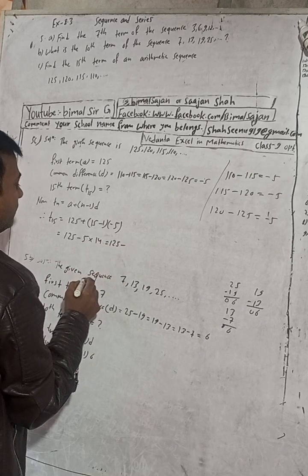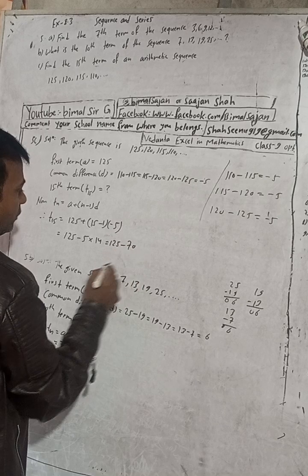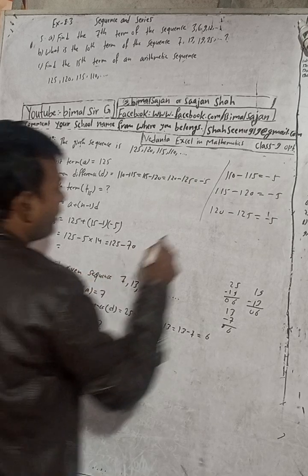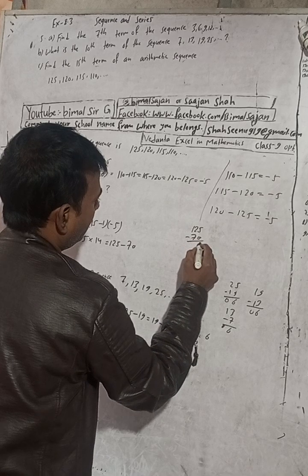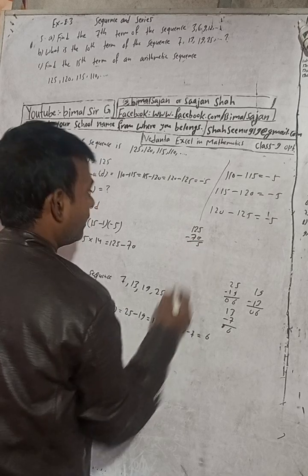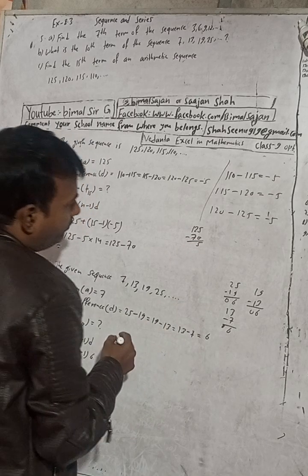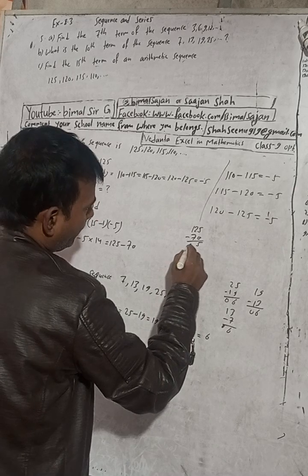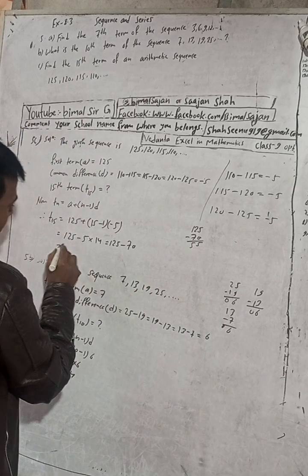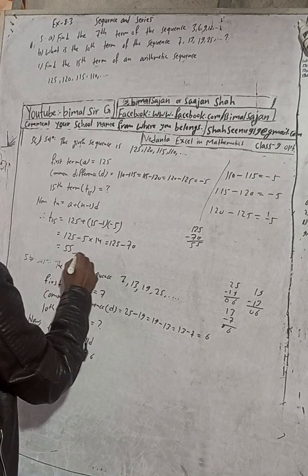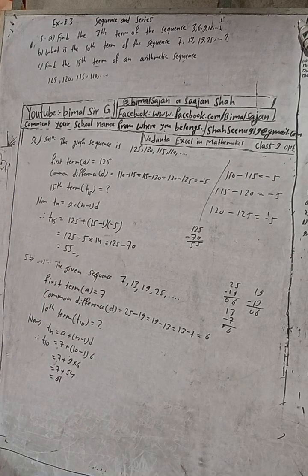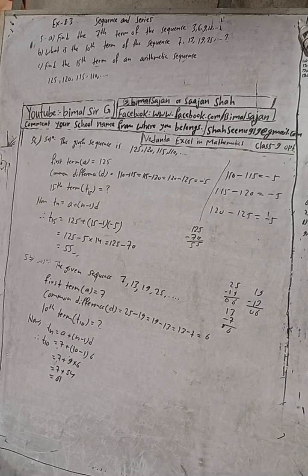Solving: 14 × 5 = 70. Then 125 − 70 = 55. So the answer is 55.